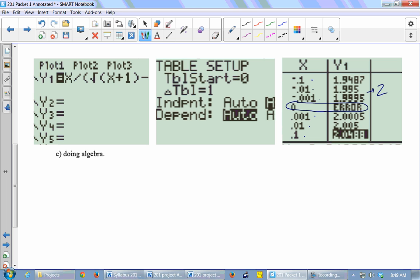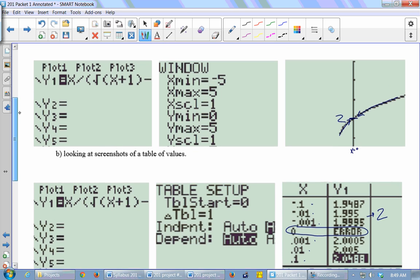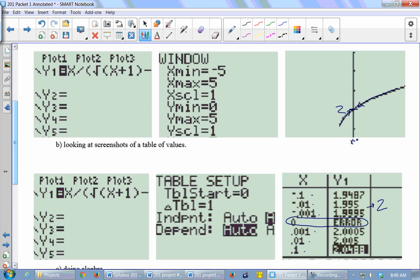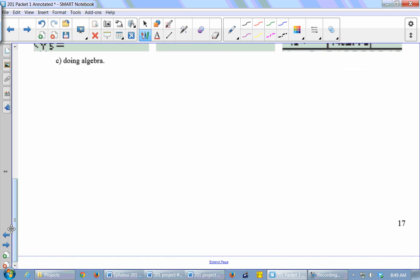But by doing algebra, we can prove what it is approaching definitively. So these things are really good to just sort of wrap your brain around what's going on. And then we'd use algebra to show it's true definitively. So I would like to know what happens as x approaches 0 of x over square root of x plus 1 minus 1.